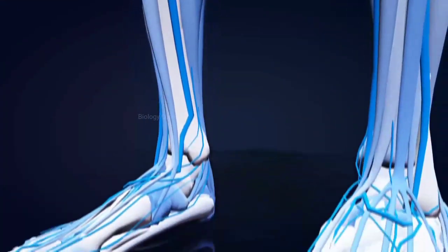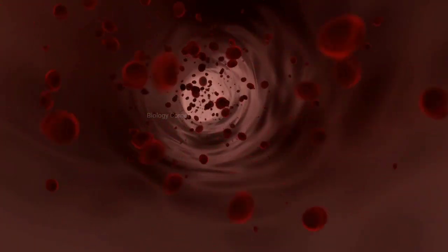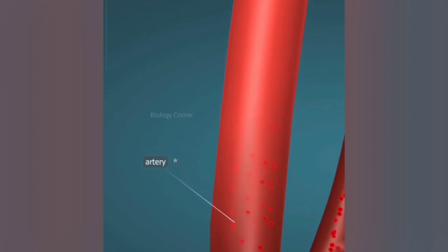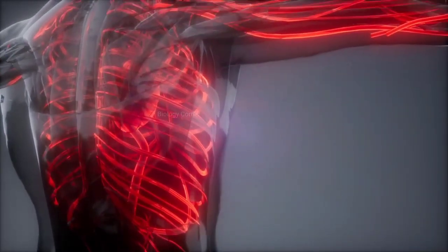Our blood vessels work to supply this blood throughout the body. The blood vessels that carry blood from the heart to the body are called arteries, while those blood vessels that carry blood from the whole body back to the heart are called veins.